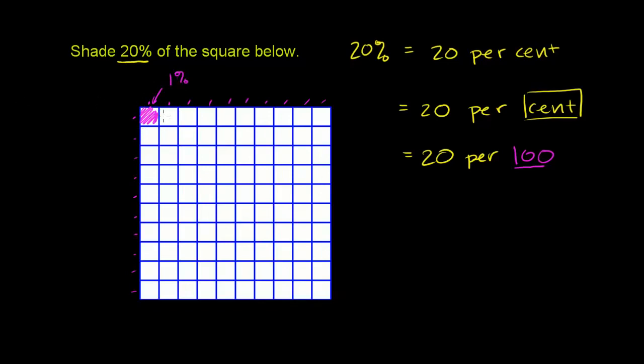If I were to shade another one, those two combined would be 2% of the entire square. It's literally 2 per 100, where 100 would be the entire square. So if we wanted to do 20,